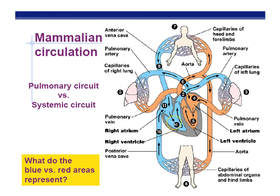Once again: right atrium → pulmonary artery → lungs → pulmonary vein → left atrium → left ventricle → aorta → capillary beds of the body — that's a lot of capillary beds — vena cava, back to the heart via the veins, right atrium, right ventricle.